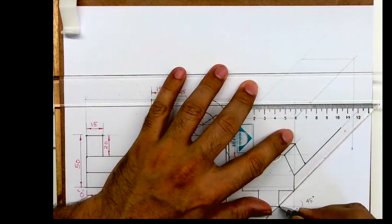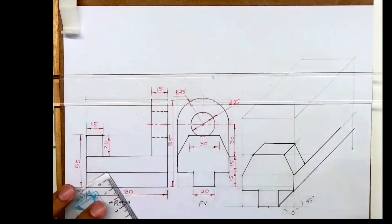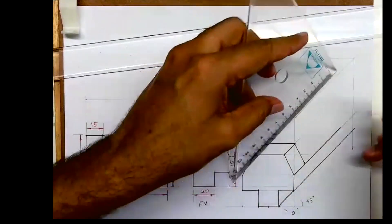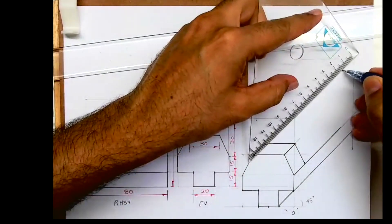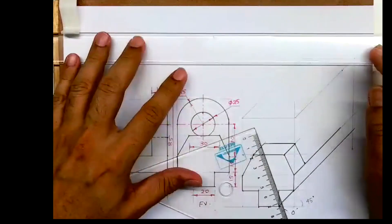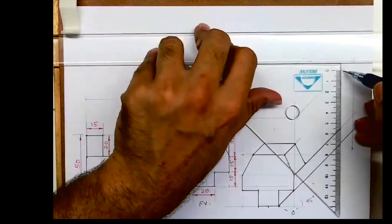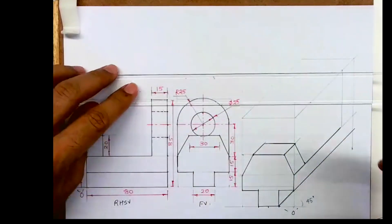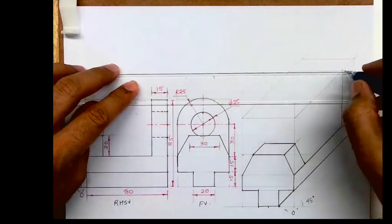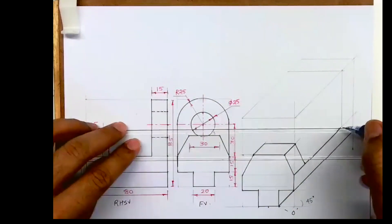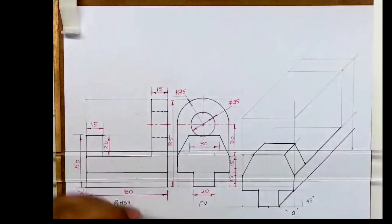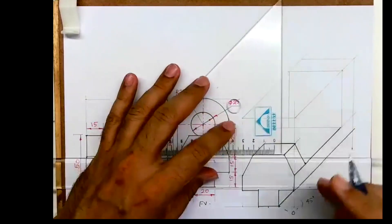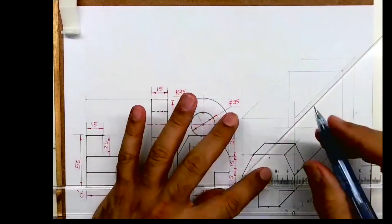This will be also dark. Now after this, we'll see this circular part. How much is this? 15. First, I will mark 15. And you draw a vertical line from here. This is how you'll get this box.